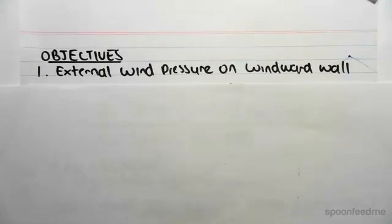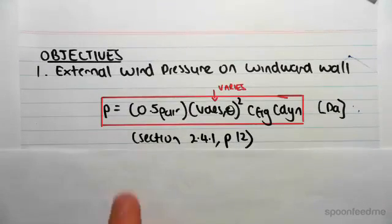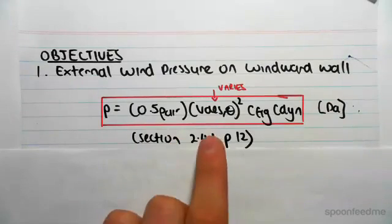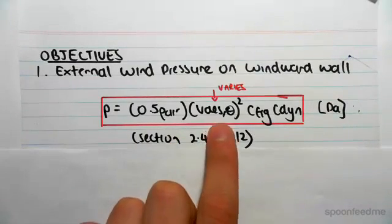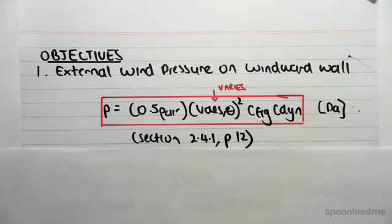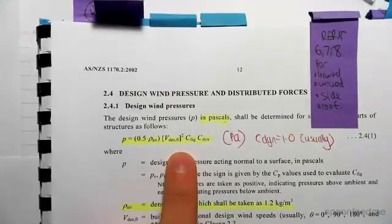The objective of this video and the next video is going to be finding the external wind pressure on the windward wall. Just to remind you, the formula for pressure is 0.5 times the density of air times V-theta squared times C-fig times C-dynamic, that's in pascals, taken from section 2.4.1 on page 12.